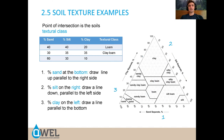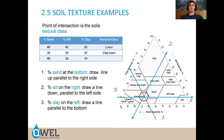One more example: 60% sand, 30% silt, and 10% clay. Following 60% sand and 30% silt on the triangle — since 60 plus 30 equals 90, the remainder must be 10% clay — that puts us in the sandy loam category.